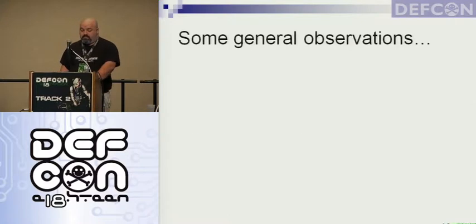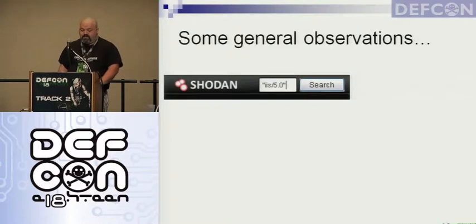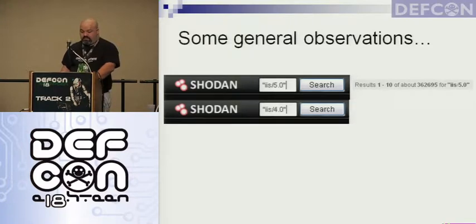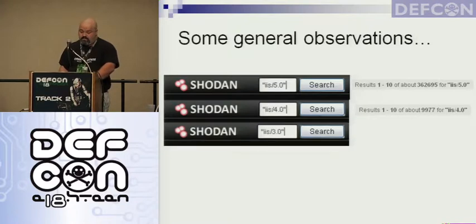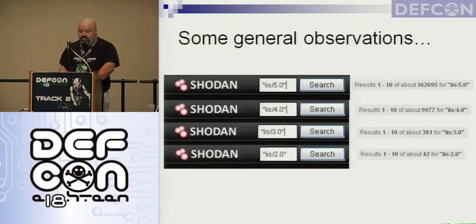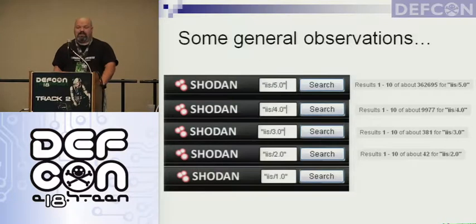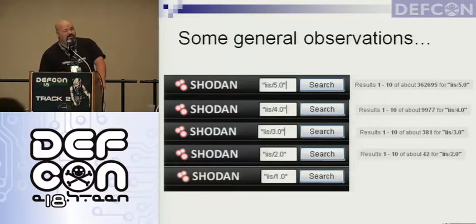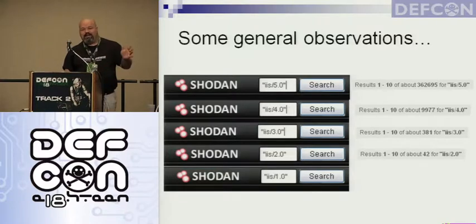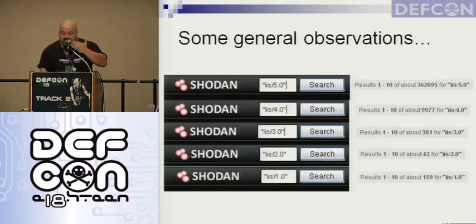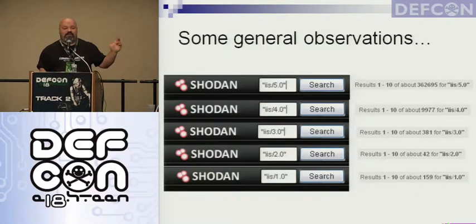Some general observations from Shodan searches: IIS 5.0 — that's Windows 2000 — has 362,000 results. IIS 4.0 has almost 10,000, going back to the late 90s. IIS 3.0, and then IIS 2.0 has 42 results. IIS 1.0 maps to maybe Windows NT 3.51, around 1994-95. If you go to those web pages, they look like they were made in 1995 and never touched since.